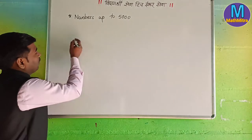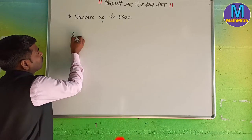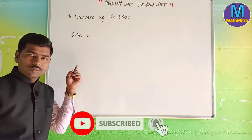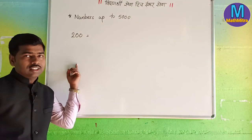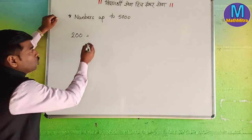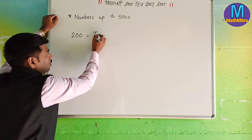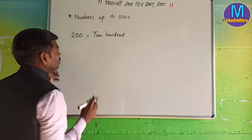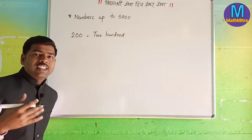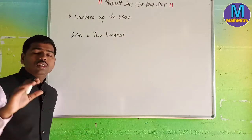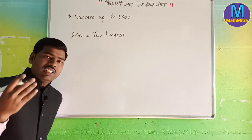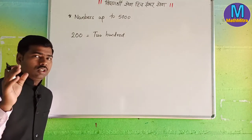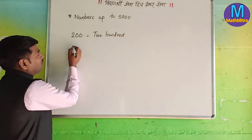Let me tell you, why is this the first number? Do you know this number? What is the number? This is 200. Correct. 200. Next number. We are going to use numbers up to 5000 and do revision. We are going to start the topic. What is the number? 200.